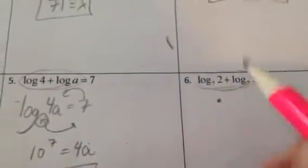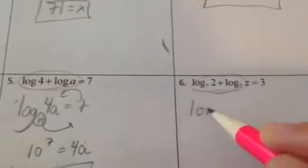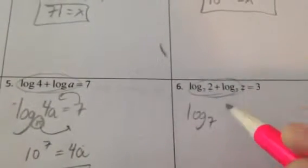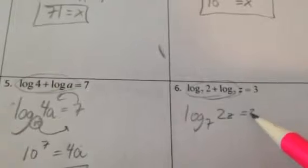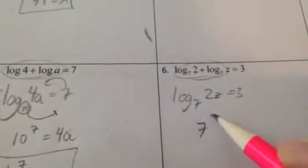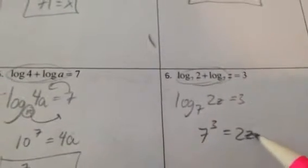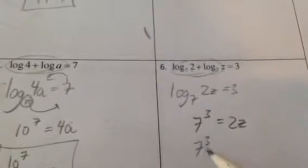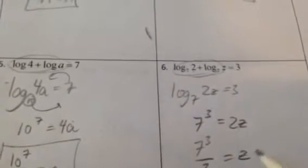Smoosh these together. It'll be log base 7 multiplied 2 times z equals 3. So 7 to the 3rd power equals 2z. Divide by 2. 7 to the 3rd divided by 2 equals z, all alone and lonely. There we go.